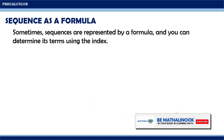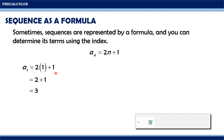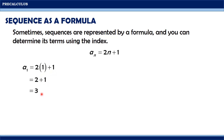Sometimes, sequences are represented by a formula, and you can determine their terms using the index. For instance, using the formula a sub n equals 2n plus 1, we can generate terms by substituting the index into the formula. For the first term, a sub 1, we substitute 1: 2 times 1 plus 1 equals 2 plus 1, which equals 3. Therefore, the first term of the sequence is 3.